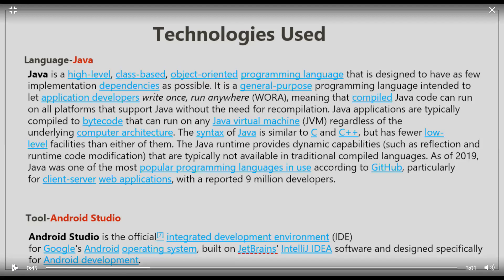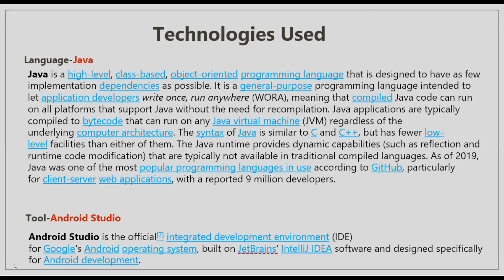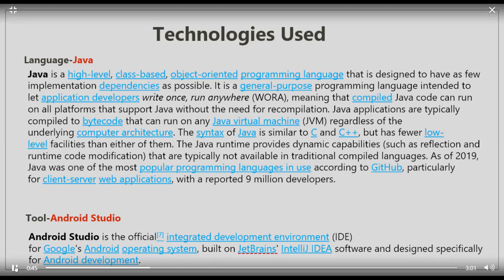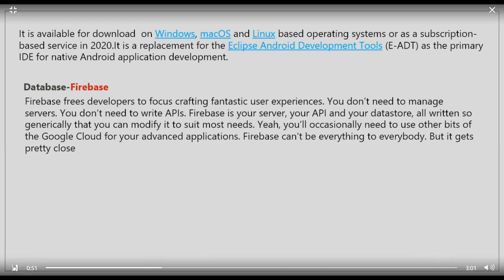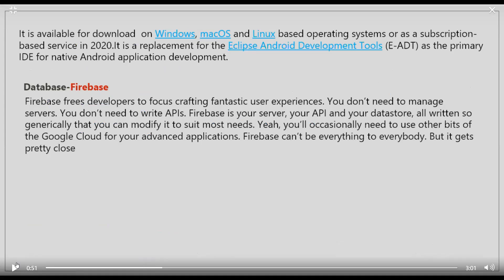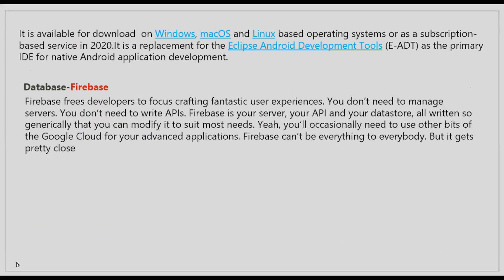The tool we used was Android Studio, which is the official integrated development environment for Google's Android operating system, built on JetBrains' IntelliJ IDEA software and designed specifically for Android development. It is available for download on Windows, Mac OS, and Linux-based operating systems, or as a subscription-based service since 2020. It is a replacement for the Eclipse Android Development Tools as the primary IDE for native Android application development.